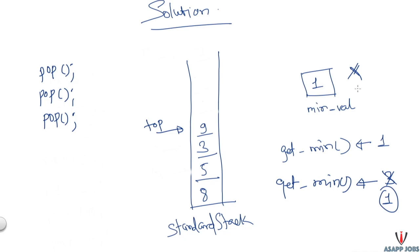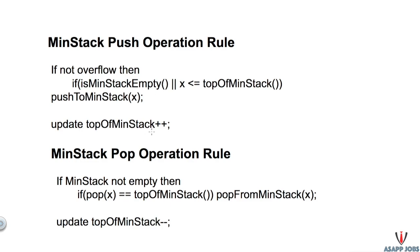This indicates we need to store the history of minimum element values using some data structure. But the question says we cannot use extra data structures like arrays or trees. So what we are left with is: we can use another stack to store the minimum element value. It's now clear that we need an auxiliary stack to maintain the minimum history.